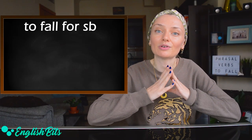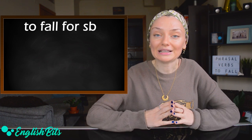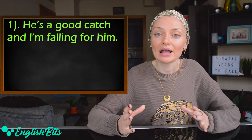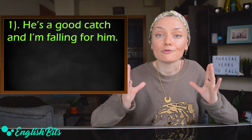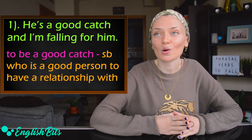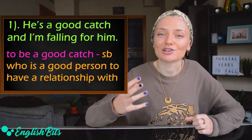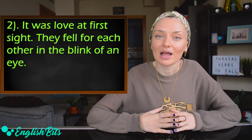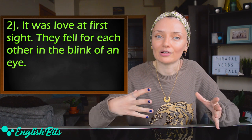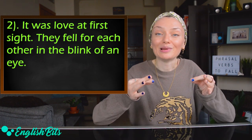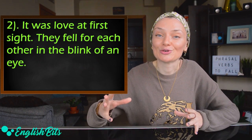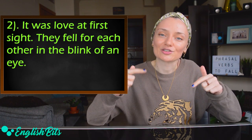Let's continue. Number five, to fall for someone. It means to be strongly attracted to someone. For example, he's a good catch and I'm falling for him. The idiom to be a good catch means someone who is a good person to have a relationship with. And one more example: it was love at first sight — they fell for each other in the blink of an eye. If you want to know what in the blink of an eye means, check out my lesson on 10 C1 and C2 phrases. You can find the link in the description box.